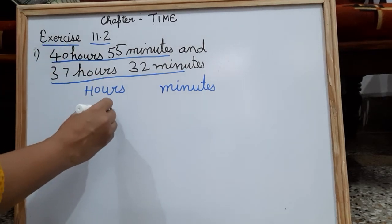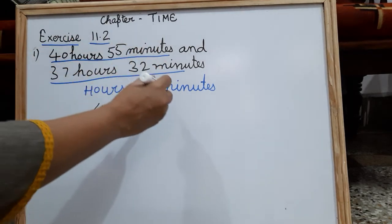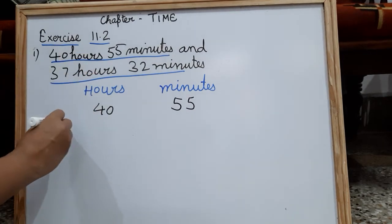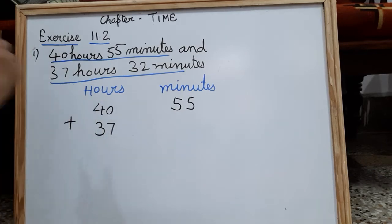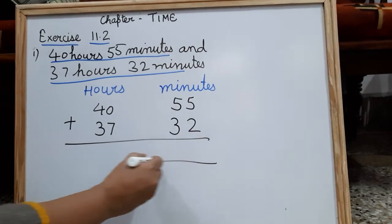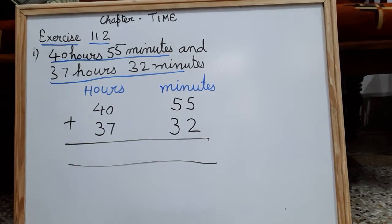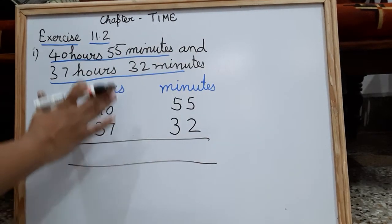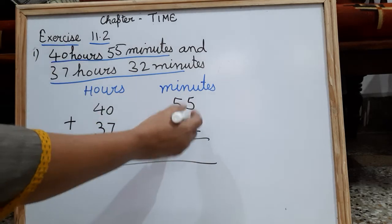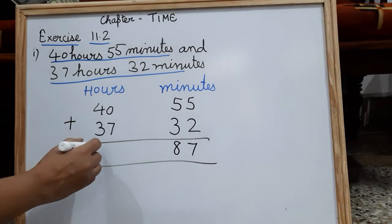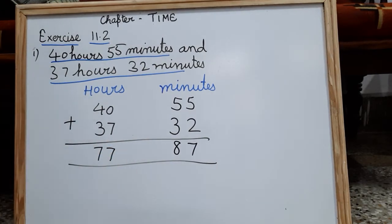So write 40 hours and 55 minutes in the first row, and 37 hours and 32 minutes below it. Now add them. Minutes will be added under minutes, and hours will be added under hours. So you get 87 minutes and 77 hours. But this is not the answer.